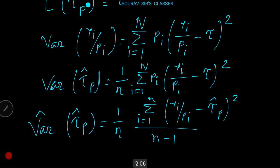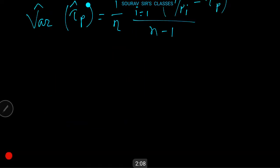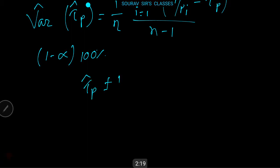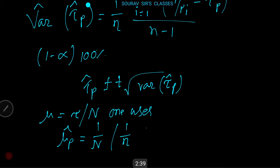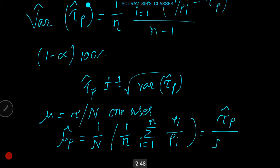An approximate (1 − α) × 100% confidence interval for τ is τ̂_P ± t × √v̂ar(τ̂_P). For the population mean μ = τ / N, one uses an unbiased estimator μ̂_P = (1/N) × (1/n) × Σ(i=1 to n) y_i / Π_i = τ̂_P / N.